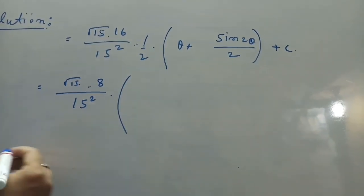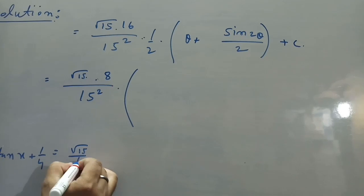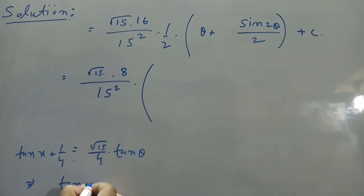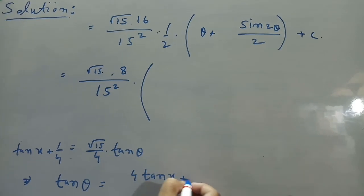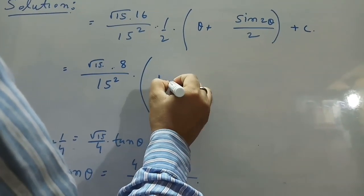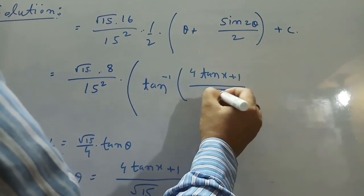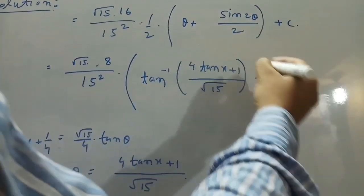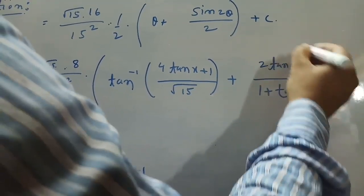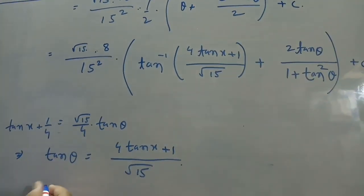Now we back-substitute the value of θ. Recall we put tan x + 1/4 = (√15/4) tan θ, so from this, tan θ equals (4 tan x + 1)/√15. Therefore θ = tan⁻¹[(4 tan x + 1)/√15]. Also sin 2θ = 2 tan θ/(1 + tan²θ), and we substitute the value of tan θ here.